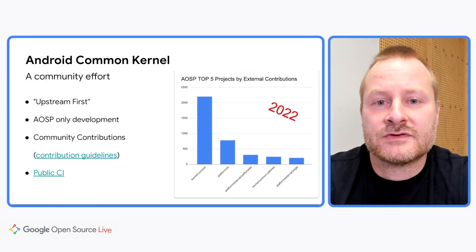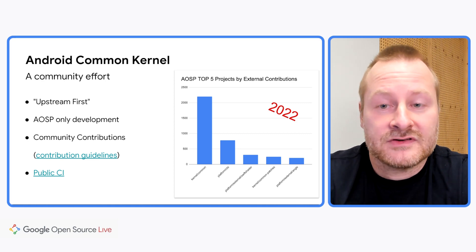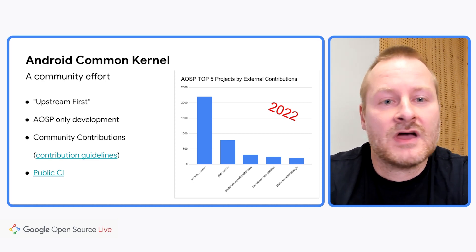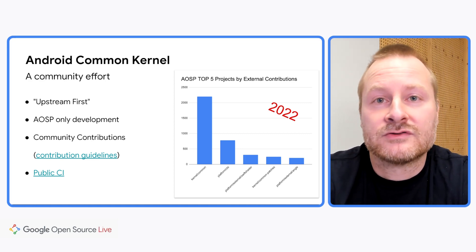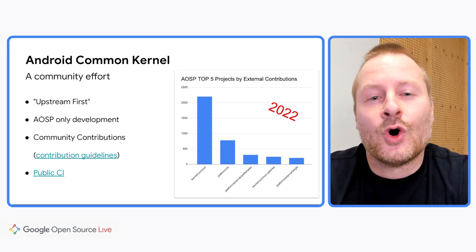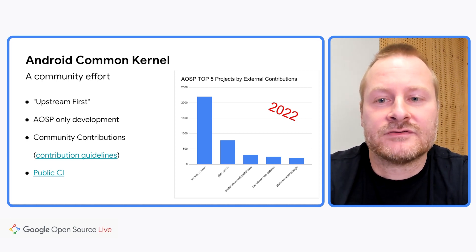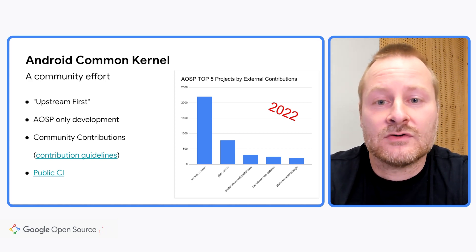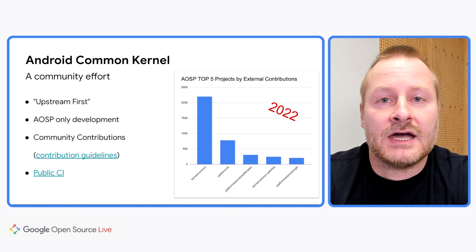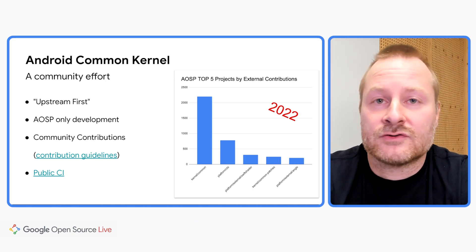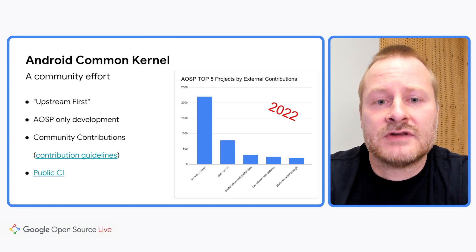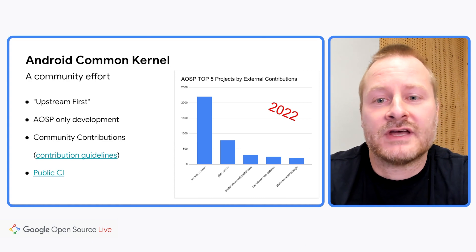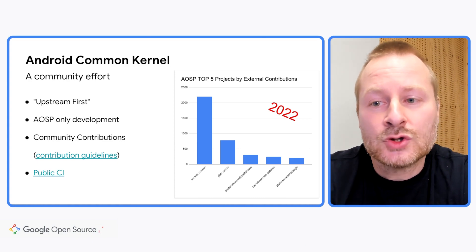We accept contributions for Android-specific features, like for example build system integrations. We also accept backports for upstream features, if reasonable, according to our contribution guidelines. Again, all development happens in public. Even the build and test infrastructure is publicly accessible. There is no secret source for building or developing kernels, and everything is publicly documented on source.android.com. As a result, in 2022, the ACK kernel common project was the AOSP project with the most non-Googler contributions.